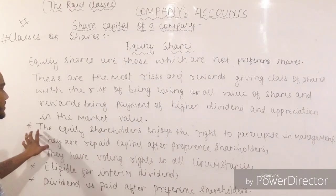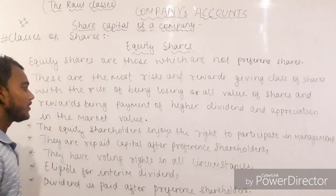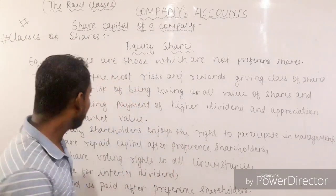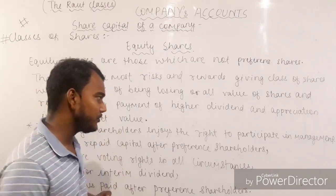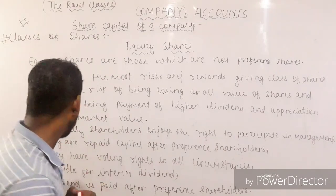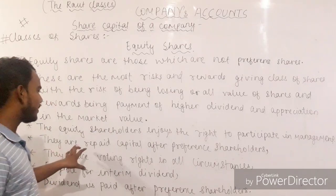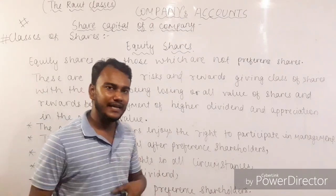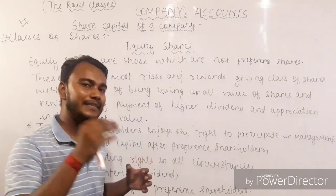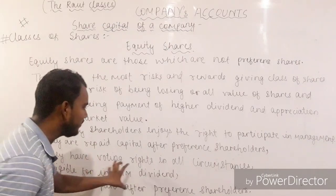As you can look here, the first contrasting point is that equity shareholders enjoy the right to participate in the management, but preferential shareholders do not carry the right to participate in managerial activities. The second contrasting point is that equity shareholders are repaid their capital after preference shareholders. In case the company winds up, preferential shareholders are given the amount of capital before equity shareholders.